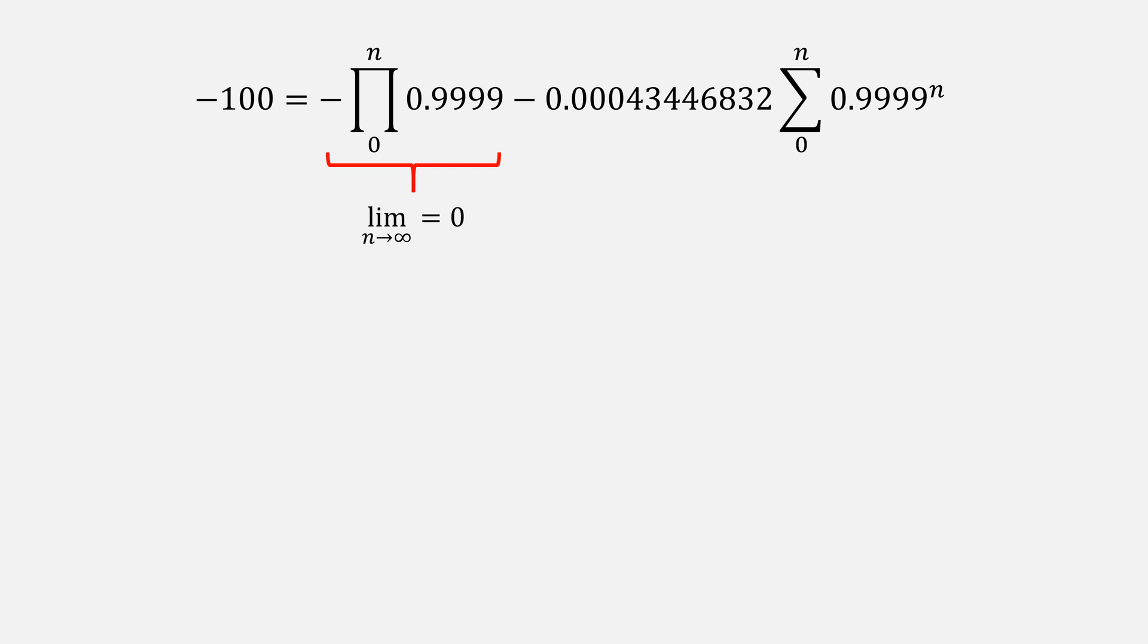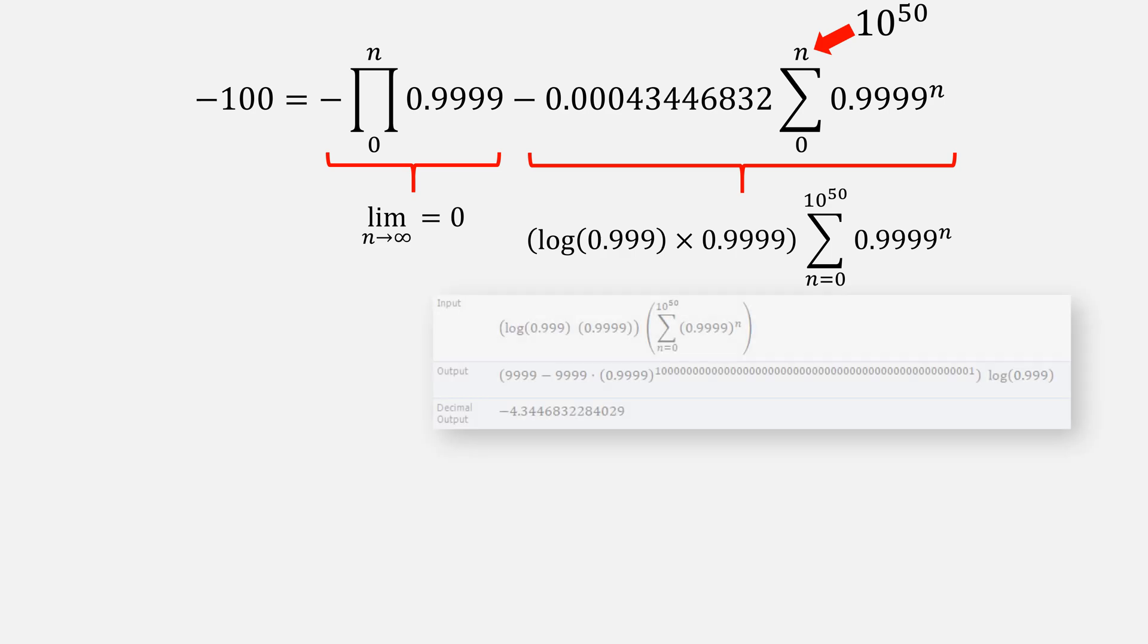Actually, we don't need to technically solve for it, because Delaney gave us 10 to the 50. Let's try plugging that into this summation, and simplifying it a little. When we plug that summation into a solver, it gives us an output of about negative 4, which is nowhere near negative 100. So what went wrong?